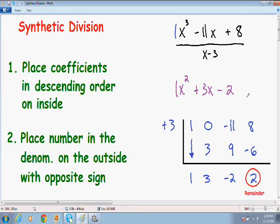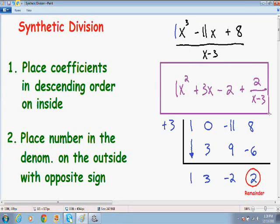And finally we have our remainder. And since we have a remainder of 2, we always put that in the numerator of a fraction. And you always put what you're dividing by. Since we're dividing by an x minus 3, we put that in the denominator. And this is our final answer.